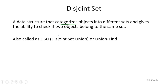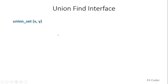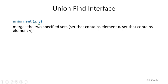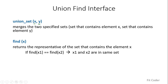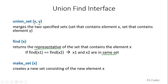The interface of this data structure has three functions. The first is union_set, which merges two sets — the set containing element x and the set containing element y — into one set. The second is find, which returns the representative of the set containing element x. If find is called for two elements x1 and x2 and both return the same value, they belong to the same set. The third is make_set, which creates a new set containing only the passed element.